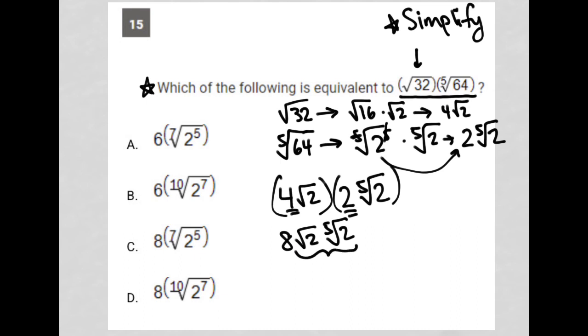I am going to convert them into exponent form and call this 8 times 2 to the 1 half times 2 to the 1 fifth. I know that whenever I have the same base and I'm multiplying, I can add the exponents. So this becomes 8 times 2 to the 1 half plus 1 fifth.